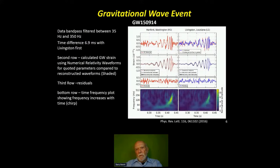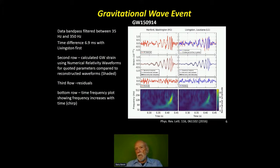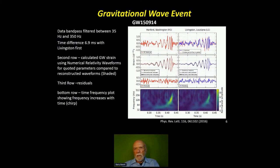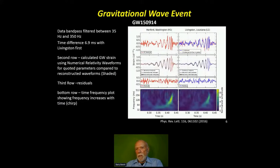This picture from the first event is a good illustration. The signals we see are very much like the calculations from Einstein's equations. The top panels are the actual observations of the very first event in two detectors — one in Hanford, Washington, one in Livingston, Louisiana. They look very similar to each other. The second panel down is the calculations after fitting the parameters of Einstein's equations, and you'll notice they look very much alike.